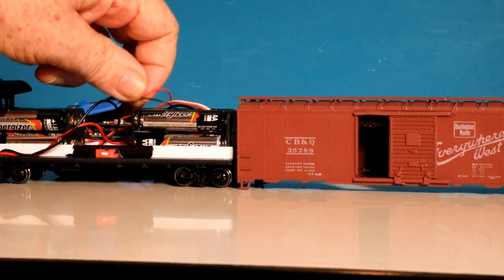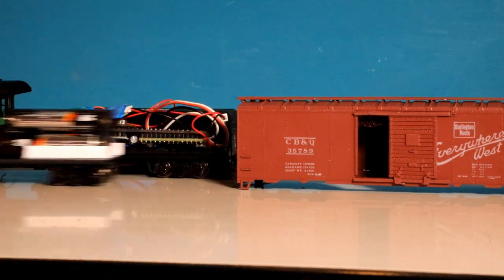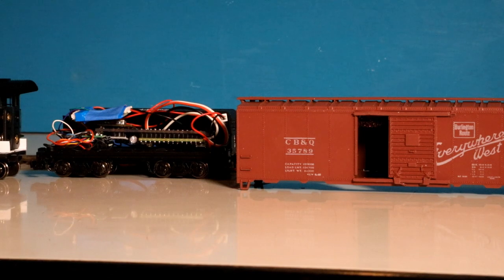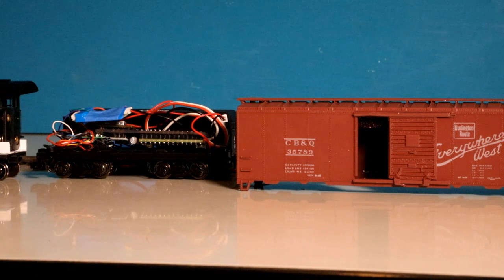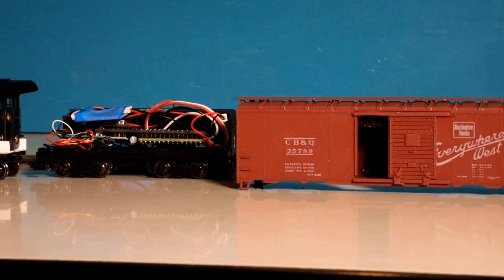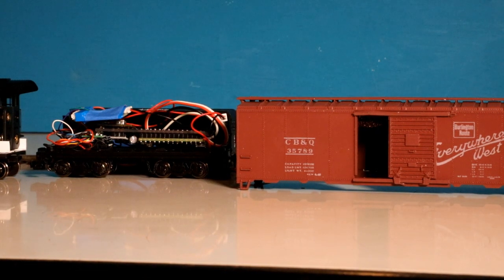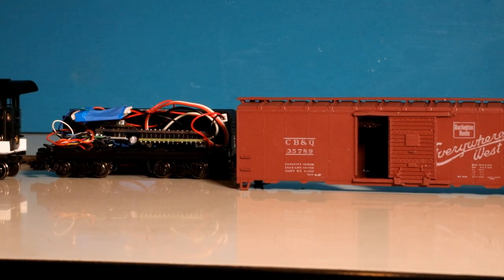All of the features for DCC control are still enabled with the Digitrax decoder. So if you had set it up for consisting, it's still there. If you set it up for a speed table, it's still there. If you set it up for momentum, it's still there. It doesn't change anything in the decoder. Anything that can be sent through the WiFi throttle server and channel to the SOCS module will be passed on to the decoder. There's no modification of that. And that's pretty much it.